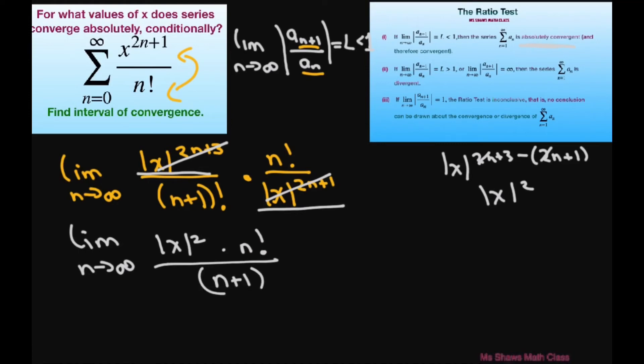And this piece is going to be n factorial divided by n plus 1 times n factorial, so this cancels out. So basically what we have is x squared because you don't need the absolute value for x squared, times the limit as n approaches infinity of 1 divided by n plus 1.